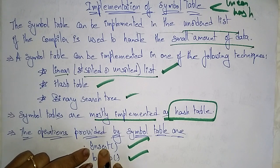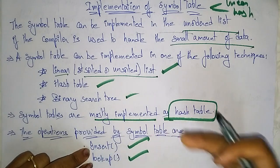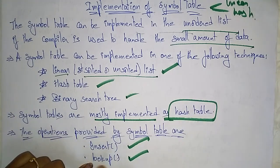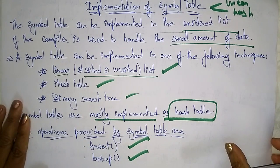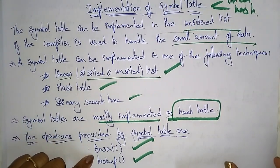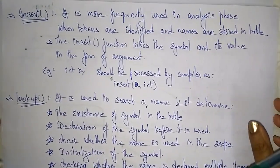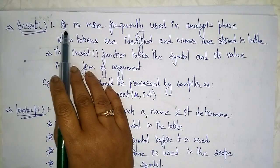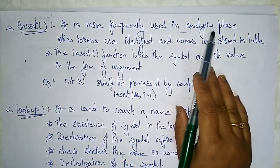Lookup means the following: when you are using those variables again — whatever values you already inserted — if you are going to use those variables in the coming modules, by using the lookup function you are just retrieving those values. So these are the two operations provided by the symbol table: insert and lookup.